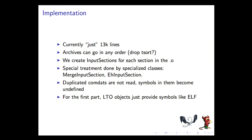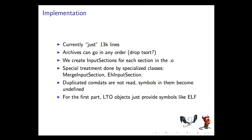I want to talk a bit about the implementation. One thing we're quite proud of is that it's pretty small: about 13,000 lines of C++. Part of it is because we use LLVM, but quite a bit is also being very careful on the design. There's very little target-specific code. The order archives can go in is also flexible: when you first see a symbol in an archive you just remember it, and at any point further down in the link if you need it you fetch it. We're doing a build order that I assume is topological sort; we might be able to just drop it.